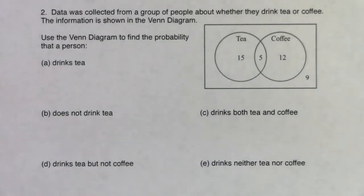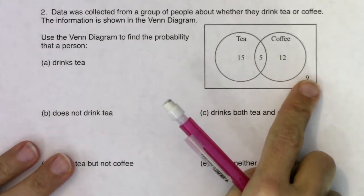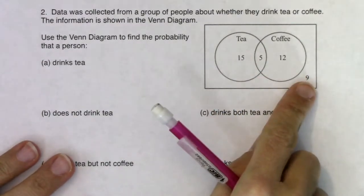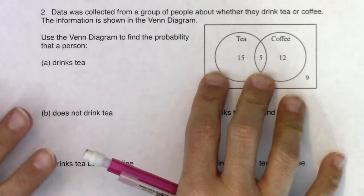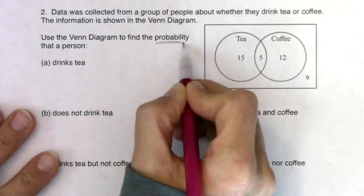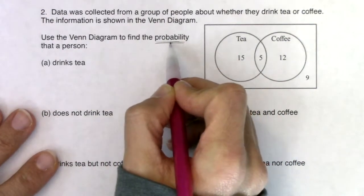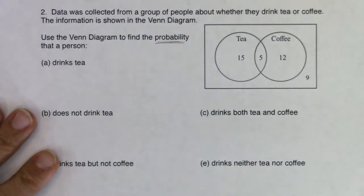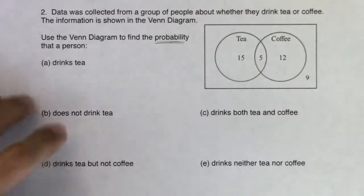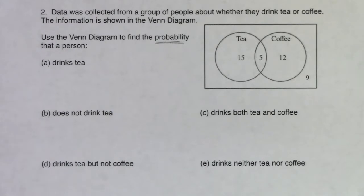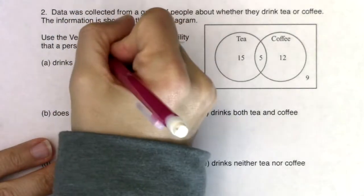Here is our next Venn diagram problem. This one's a little different in that they gave us the numbers in the Venn diagram, but just take note that these are frequencies this time and not relative frequencies. We want to be aware of that going forward because all of the problems ask us to find probabilities. So I need my answers to all be numbers between 0 and 1, meaning I need to convert these numbers to relative frequencies by dividing by sample size.